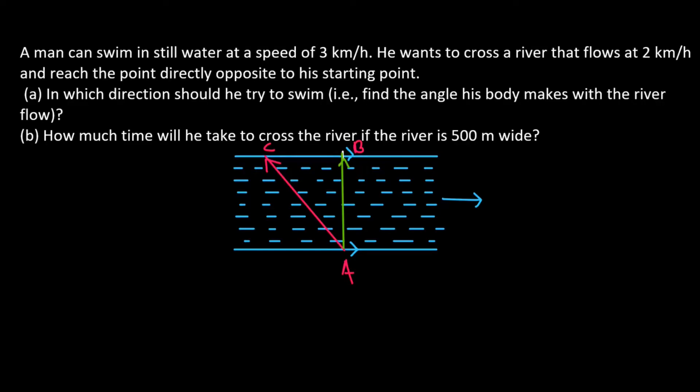If we observe from the ground or a stationary object, we will see him traveling in the direction represented by AB.